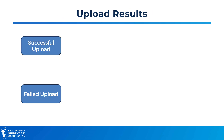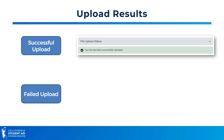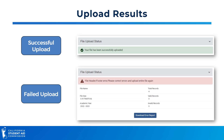Be sure to check your file upload status. If your upload was successful, you will see a message highlighted in green that says your file has been successfully uploaded. If your upload failed, you would receive a message highlighted in red. You can download an error report by clicking the button at the bottom of the page. Even one invalid record will cause the entire file to reject, so make sure you have formatted your file correctly.